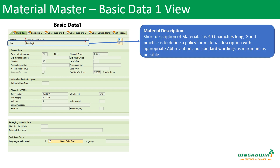First is the material description. This is the material code we are entering while creating the Material Master, or there is an option to have it created by the system itself. When we enter into the system, we have to enter the material description, which is the short description of the material. It has a 40-character length. Because it is only 40 characters, a best practice should be established to define a Material Master in a logical sequence with proper abbreviations, so that later it is not difficult to understand what that material code or description means. It is better to define a policy for this.